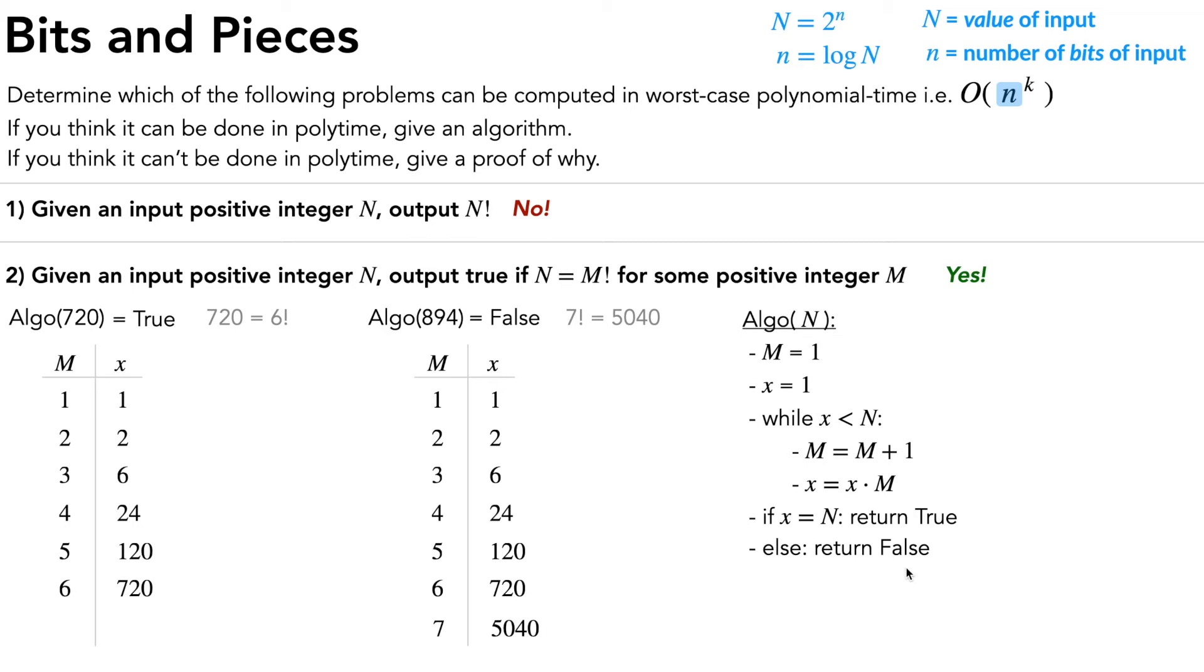Okay, so now we know that this algorithm works, but let's check that it's actually polytime. In order to determine the runtime of this, the main step we have to look into is how many times does this loop run? How many iterations does it take?